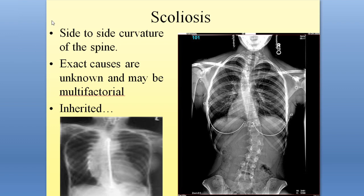The exact cause of scoliosis isn't really well known. We know that it's multifactorial — there are a number of things going on, including inheritance. So scoliosis can be inherited from your parents, but as far as the exact cause, we aren't sure. We do know that it runs in families. So scoliosis is that side-to-side curvature.